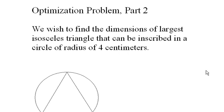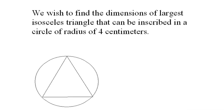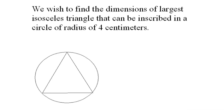Optimization problem. We wish to find the dimensions of the largest isosceles triangle that can be inscribed inside a circle of radius four centimeters. Here is the picture of this, and you can see we have this triangle inside a circle.